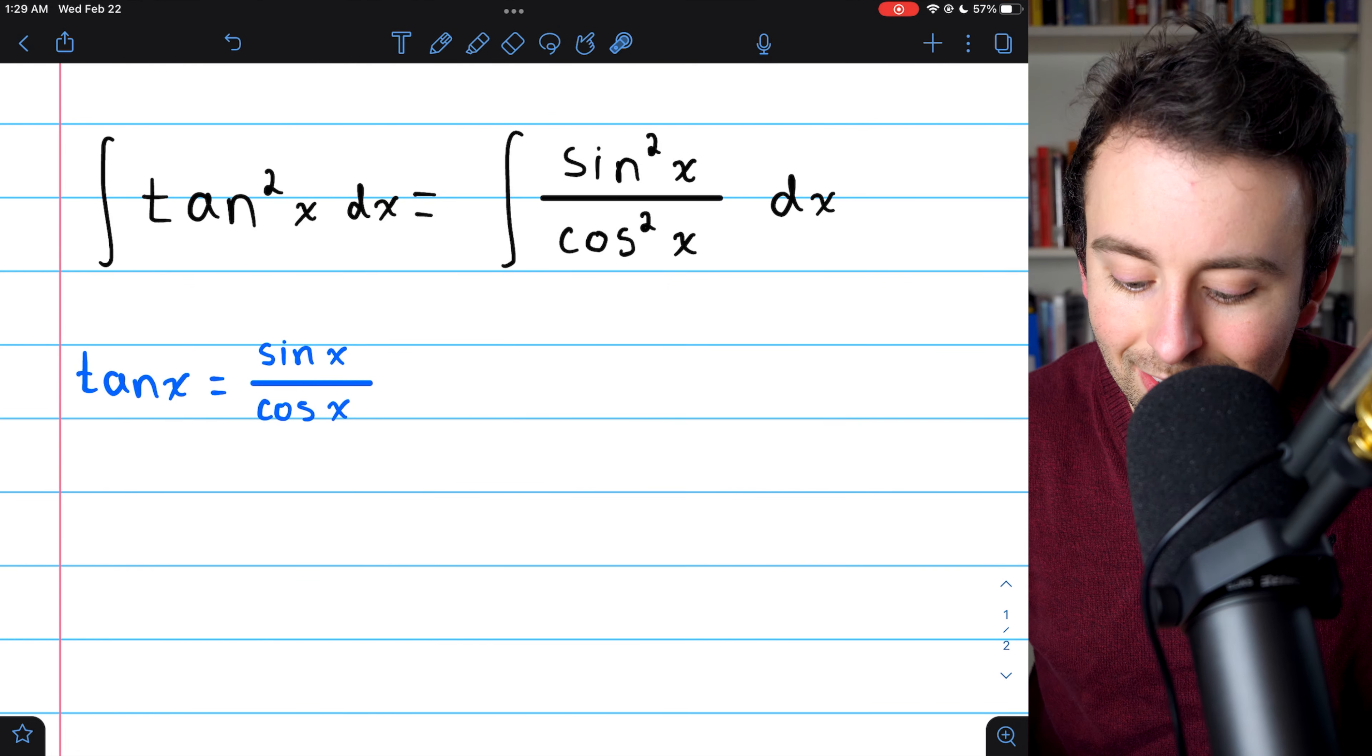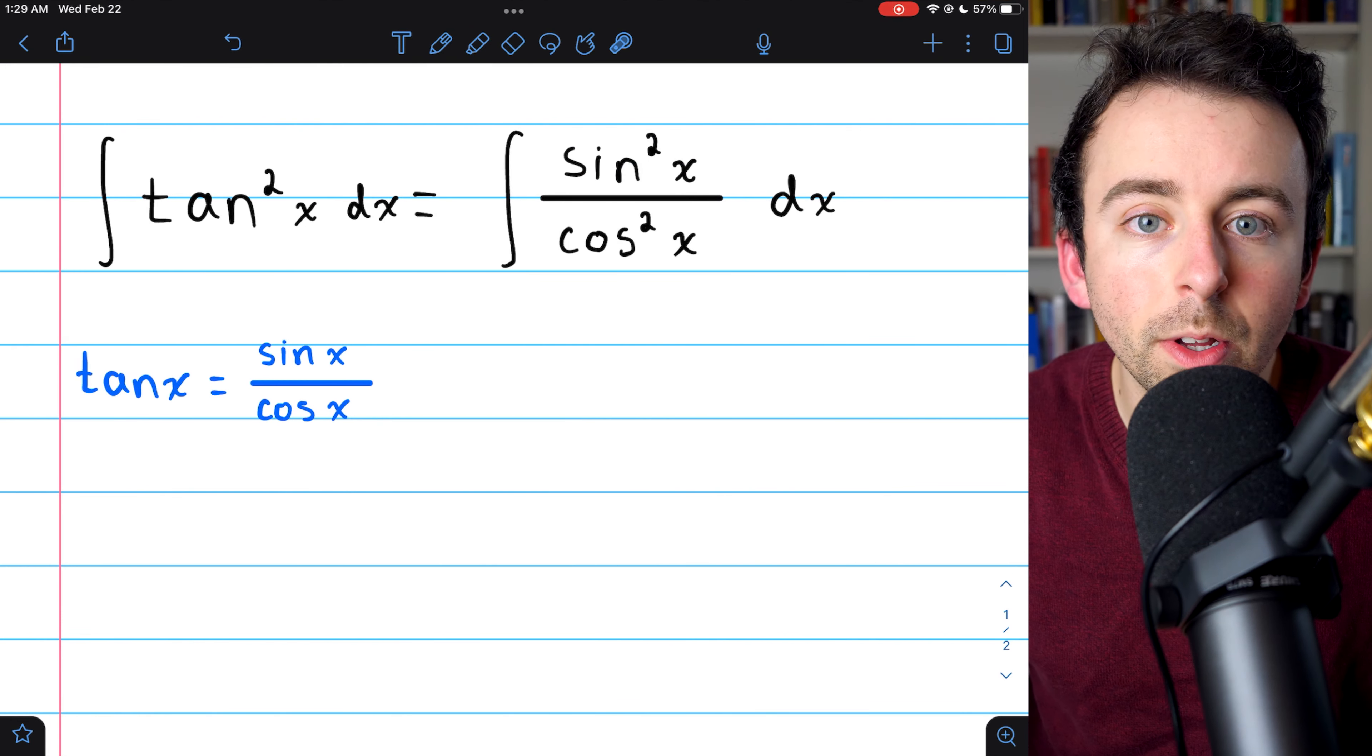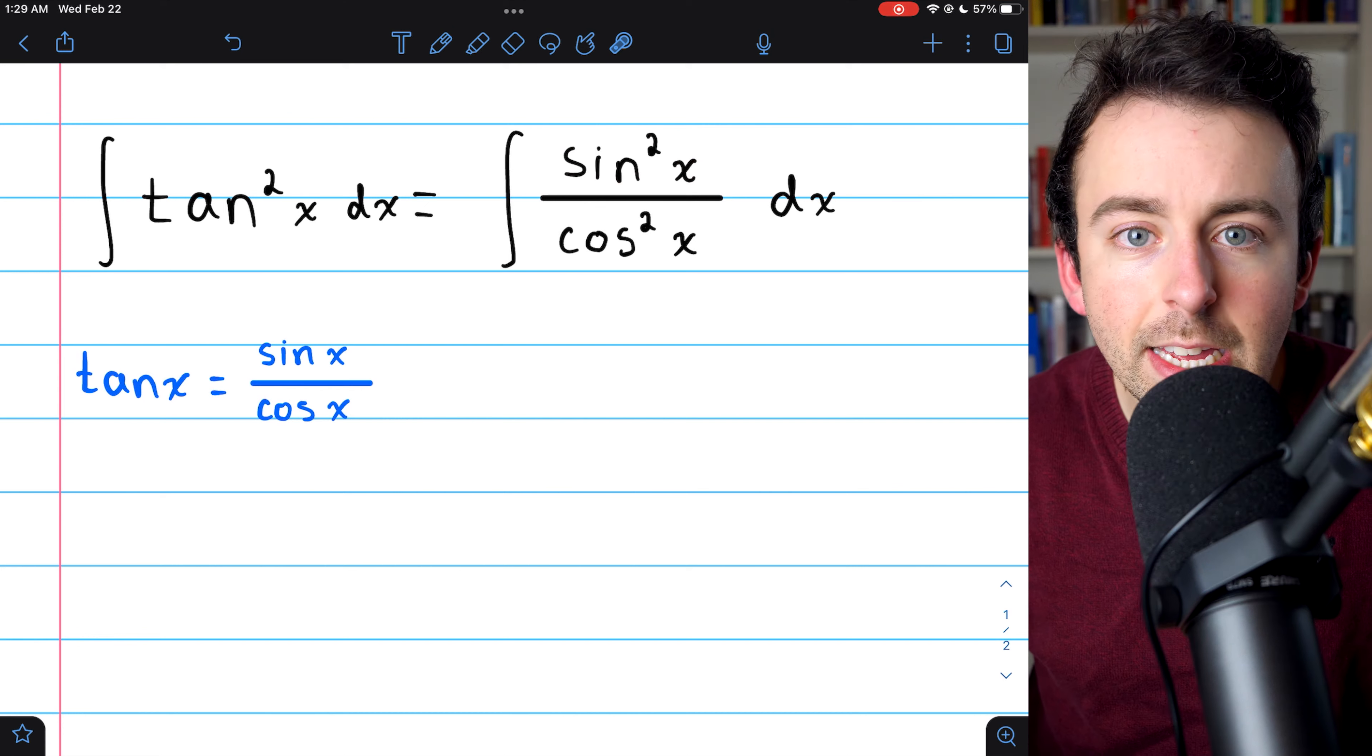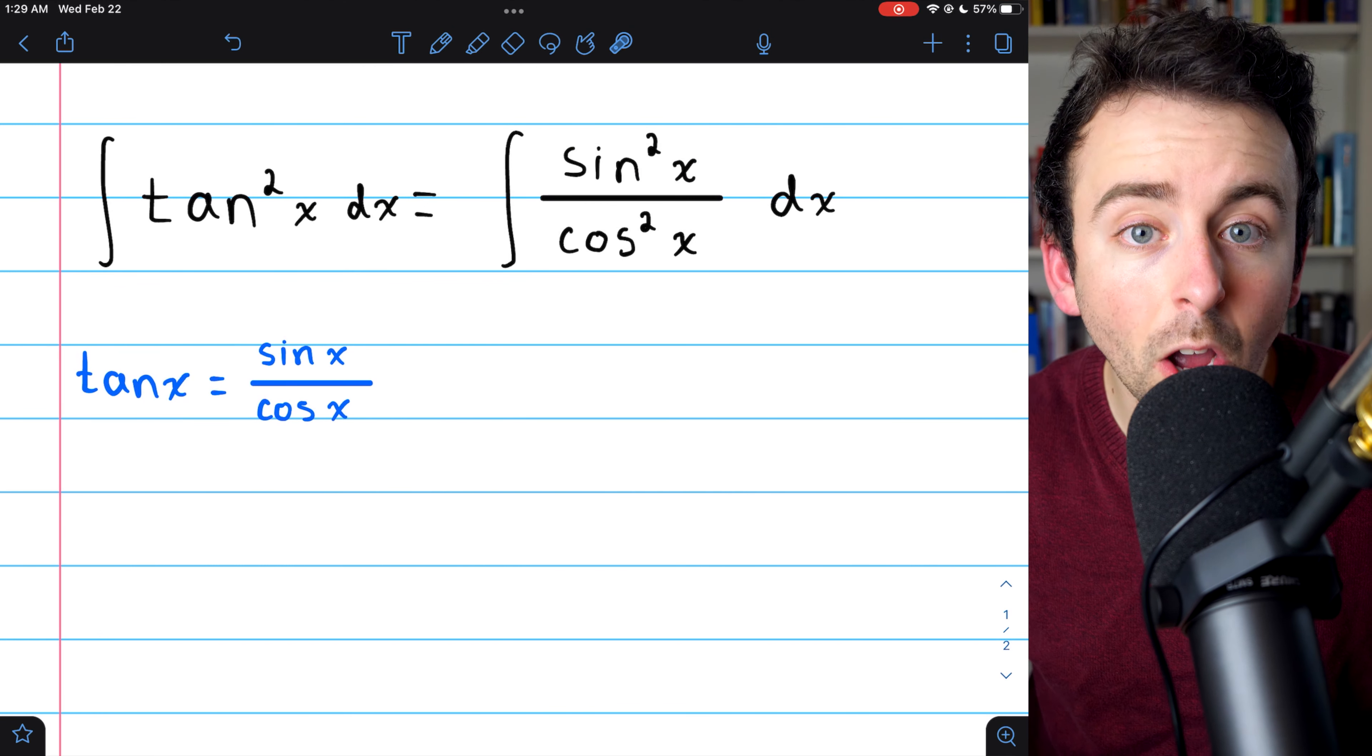But recall, sine squared plus cosine squared equals one, which means that sine squared equals one minus cosine squared.